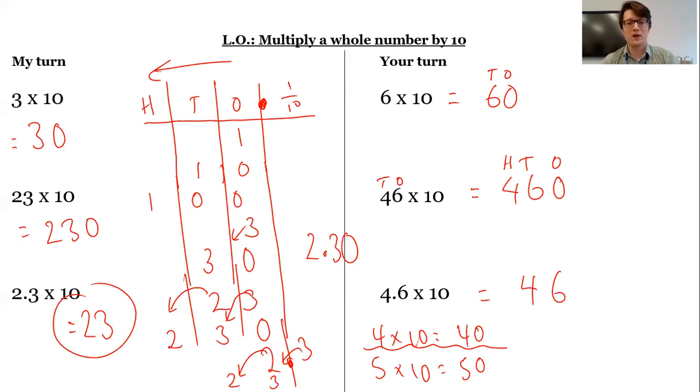So have a go now at the independent task. If you're stuck, please do draw those place value grids. Don't just guess. It's really good to get into good habits with this now to understand it now in year three so it doesn't become a big problem later down the line. Thank you.